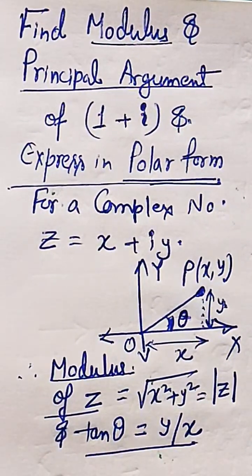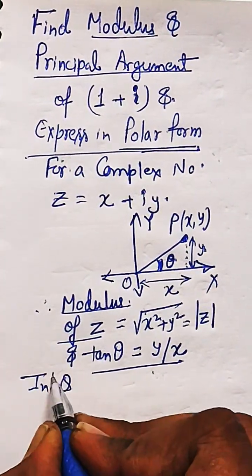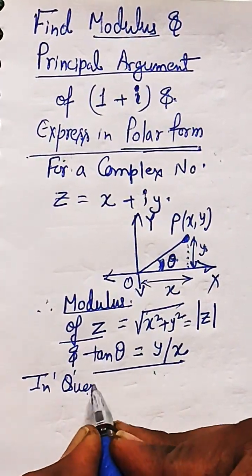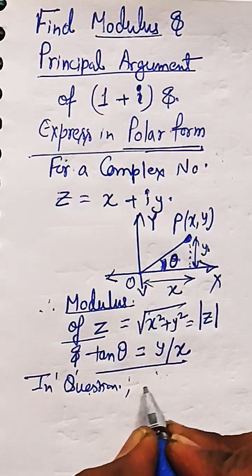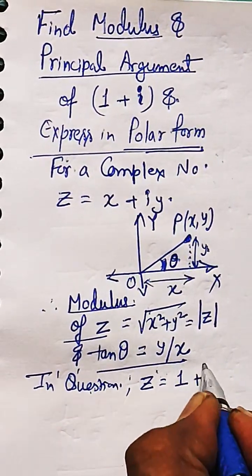Now in our question the complex number given to us is z equal to 1 plus i. Let me write it over here.